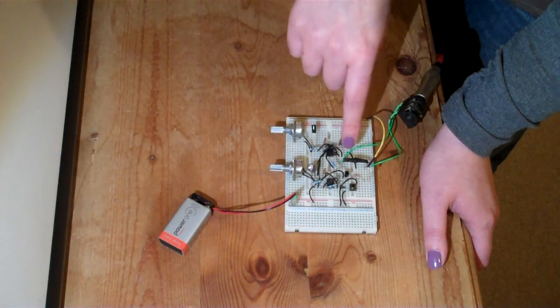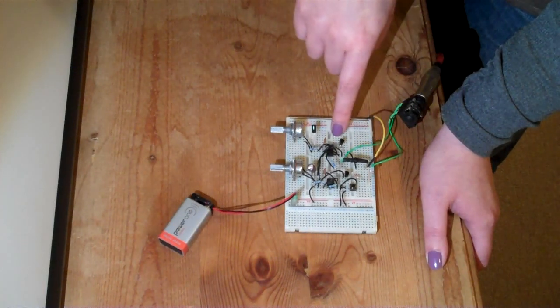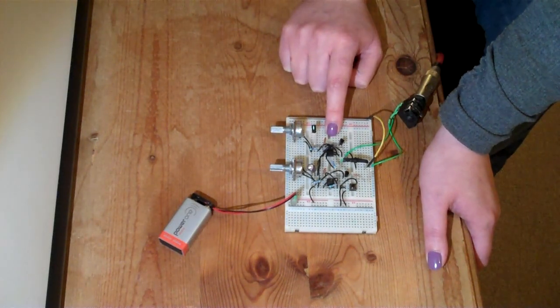This LED in the heat shrink is shining into a light dependent resistor and that LDR is controlling the amplitude of our second 555 timer which is our audio oscillator.